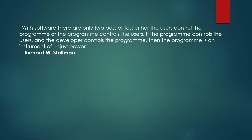One very famous person, Richard Stallman, said that software basically has two possibilities: either the user controls the program, or the program controls the user. And if the program controls the user and the developer controls the program, then the program is an instrument of unjust power.